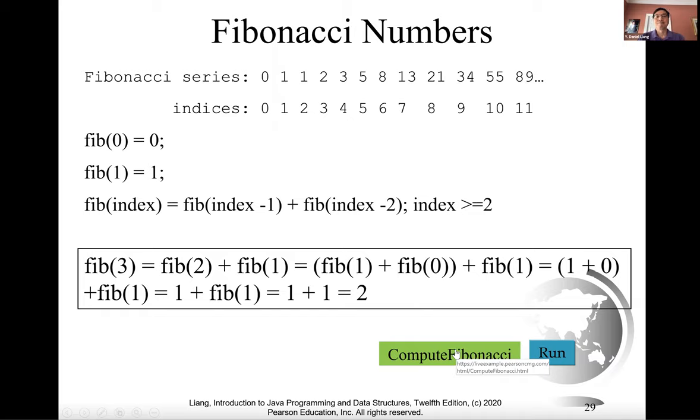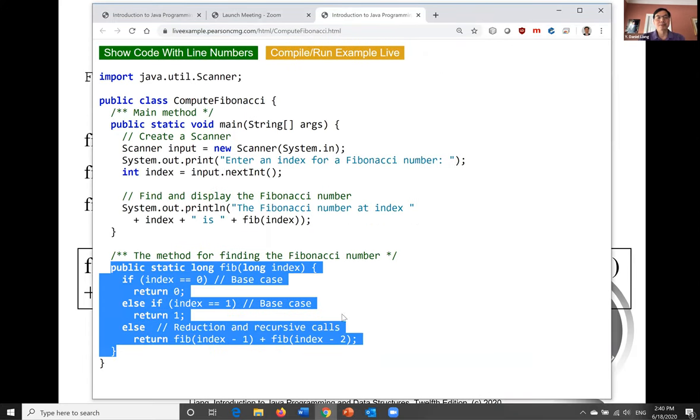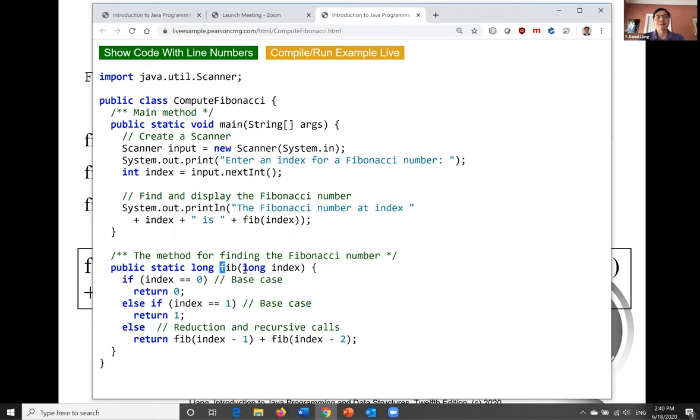Here's the recursive method that implements this recursive function. This is the method for Fibonacci number at a given index. If index is 0, returns 0. If index is 1, returns 1, else returns fib(index - 1) plus fib(index - 2).